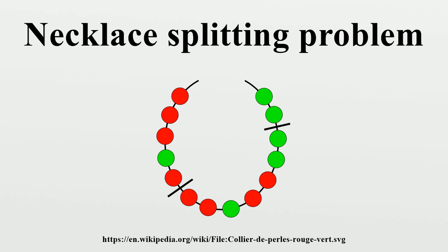Each problem can be solved by the next problem. Discrete splitting can be solved by continuous splitting, since a discrete necklace can be converted to a coloring of the real interval in which each interval of length one is colored by the color of the corresponding bead. In case the continuous splitting tries to cut inside beads, the cuts can be slid gradually such that they are made only between beads. Continuous splitting can be solved by measure splitting, since a coloring of an interval in colors can be converted to a set of measures, such that each measure measures the total length of a given color.